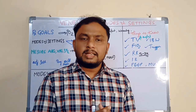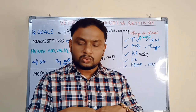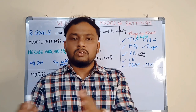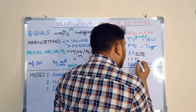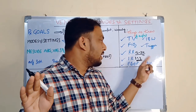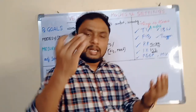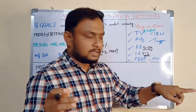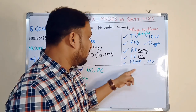IE ratio — inspiratory-expiratory ratio — how many inspirations and expirations should occur. Usually you will set 1:2, which is the normal. This is also based on the clinical condition and may vary. Sometimes a reverse IE ratio will be there — inspirations more, expirations less. So that is the IE ratio. 1:2 or 1:3 you can also keep.